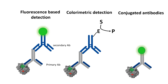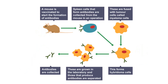Directly conjugated primary antibodies work more or less the same way, but they are far more costly, so people prefer to use a combination of primary antibody and secondary antibody.